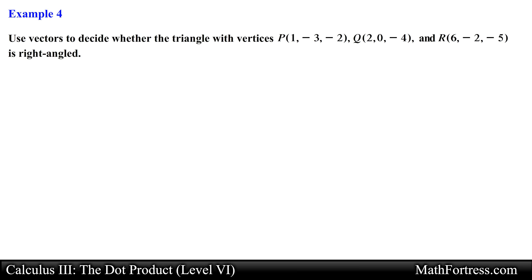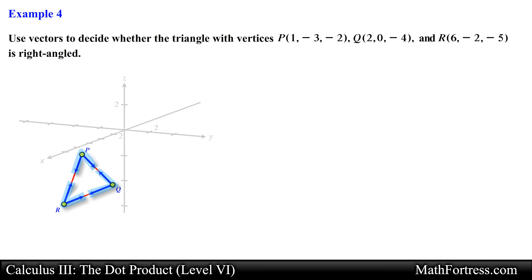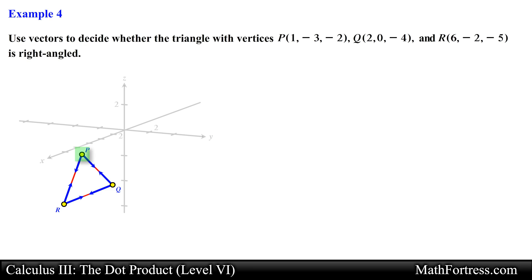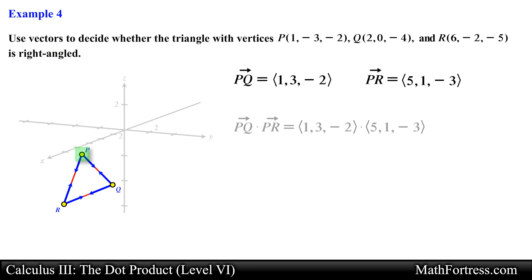Use vectors to decide whether the triangle with vertices P, Q, and R is right-angled. We can determine this by finding the component form of the vectors that form the angles of the triangle and dotting them together. If the result equals 0, the triangle is a right triangle. Let's start with angle P, formed by vector PQ and vector PR. Finding the component form of each vector and dotting them together, we obtain 14. Since the dot product is not equal to 0, this angle is not a right angle.